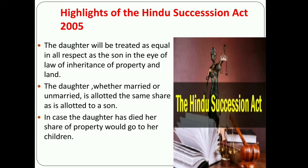The highlights of the Hindu Succession Act Amendment 2005: the Hindu Succession Amendment Act 2005 came into effect from 9th September 2005, following a government of India notification. The act removes gender-discriminatory provisions in the Hindu Succession Act 1956. Key features of the amendment: the daughter will be treated as equal in all respects to the son in the eyes of the law, in terms of inheritance of property and land; the daughter, whether married or unmarried, is allowed the same share as a son; and in case a daughter has died, her share of property would go to her children.